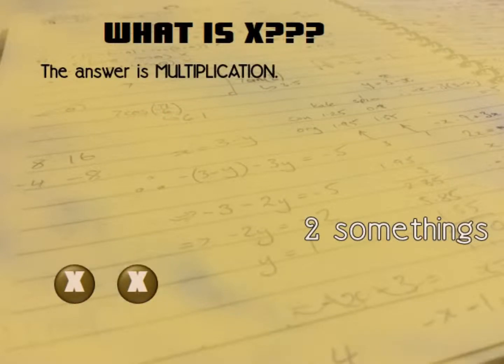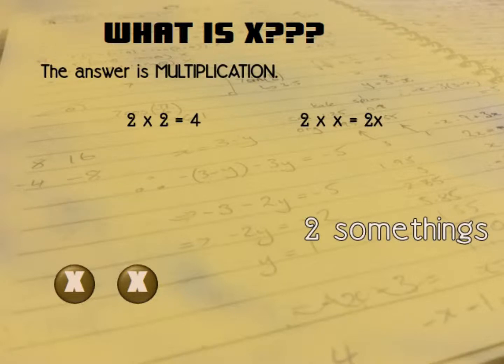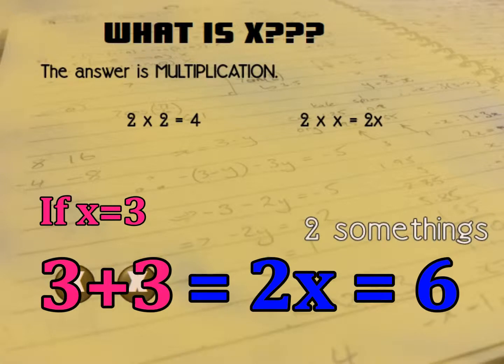So the answer is multiplication. Two times two equals four and just the same, two times X equals 2X. So two times apple is two apples. Two times people is two people. X can be a number, of course. If X is three, then two times X equals six.